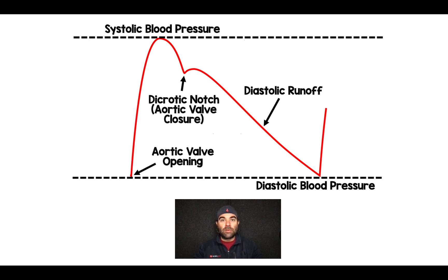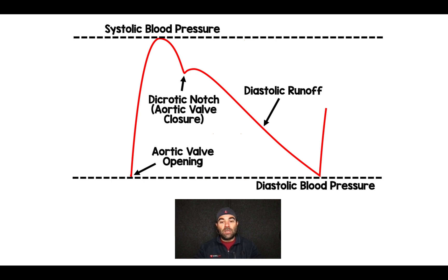I just wanted to talk about arterial line waveforms. What you see in front of you is a typical arterial line waveform. At the bottom left is where the aortic valve opens and you get systole, so you get this swift upstroke. At the very top of the waveform, this is what the machine reads as the systolic blood pressure. Then you get a drop-off and you see this little notch — that notch is where the aortic valve actually closes, also known as the dicrotic notch. Then you have your diastolic runoff and then you start the cycle all over again.